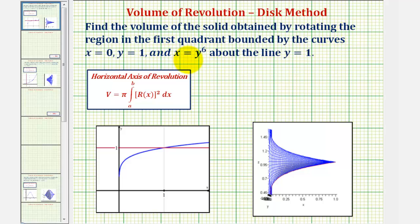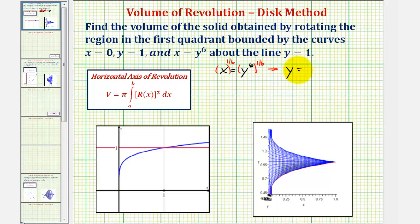First, notice how we're given the equation x equals y to the sixth, solved for x not y. Let's go ahead and solve it for y so we have a function of x. If we take the sixth root of both sides, or raise both sides to the one-sixth power, this gives us y equals x to the one-sixth, which is graphed here in blue below.